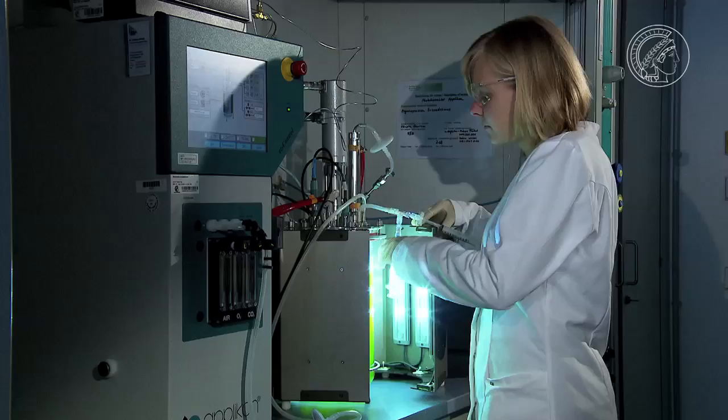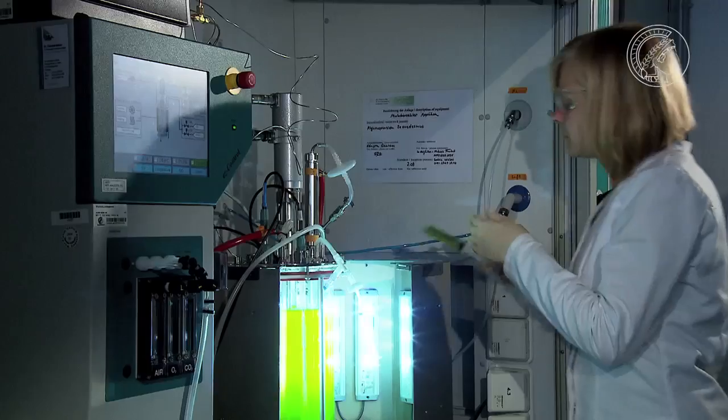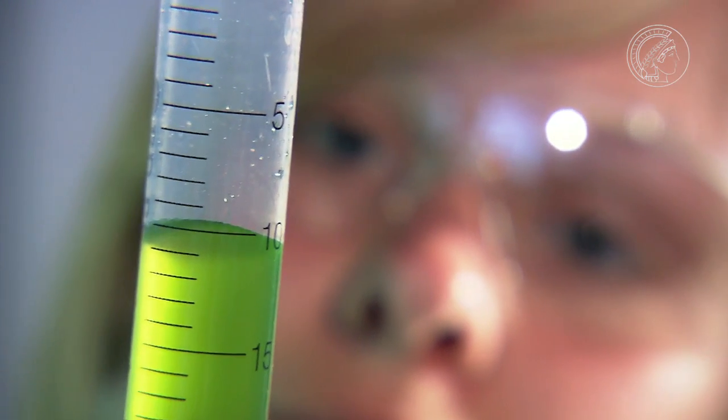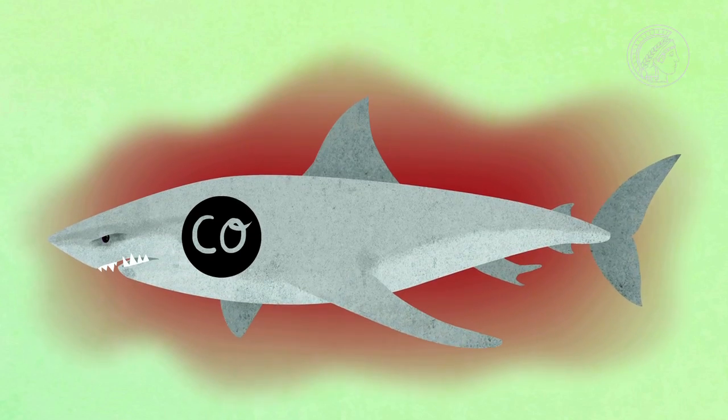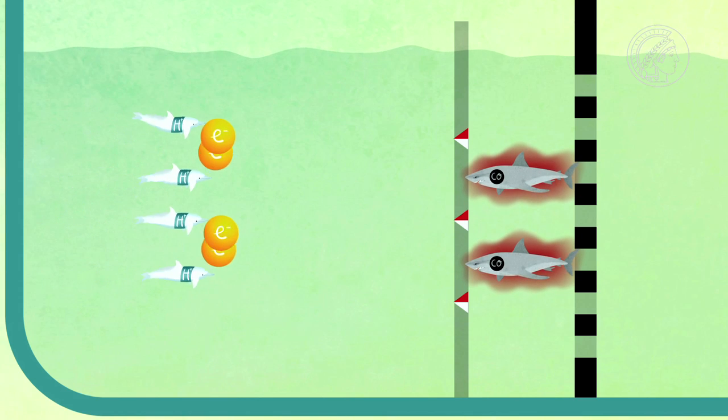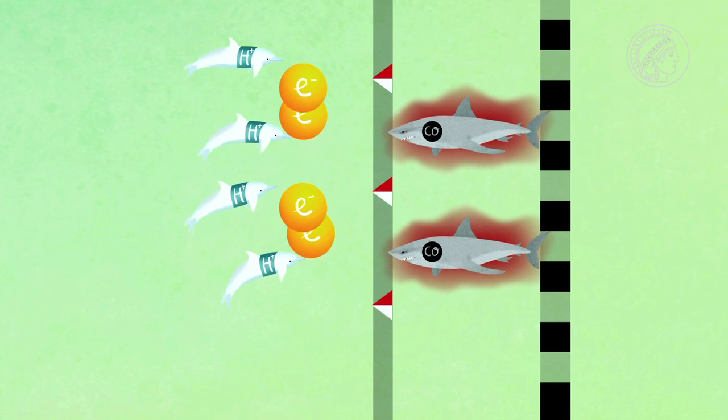The problem is that hydrogen made from biomass contains traces of carbon monoxide, and that's the shark. The carbon monoxide blocks the catalyzing agent in front of the membrane and prevents the hydrogen from being broken down effectively. This reduces the efficiency.